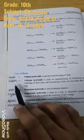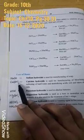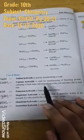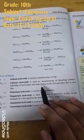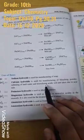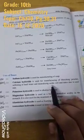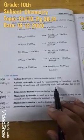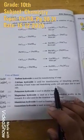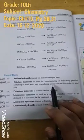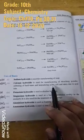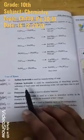Calcium hydroxide is used for manufacturing of bleaching powder, softening of hard water, and neutralizing acidic soil and lakes due to acid rain.